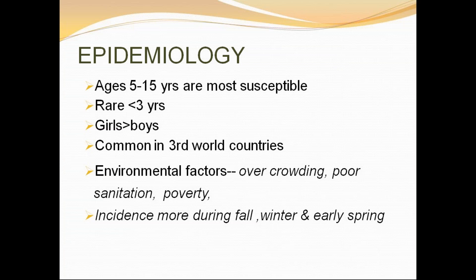To summarize so far: peak age is 5 to 15 years, the disease is systemic, and environmental factors like overcrowding and poverty play a role. With rheumatic fever, we always see serological evidence of recent group A streptococcal infection. These titers are seen more in complicated disease rather than uncomplicated streptococcal infections.